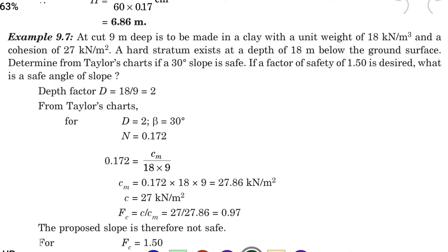So the question is, a cut 9 meter deep is to be made in the clay with the unit weight of clay is 18 kN per meter cube and a cohesion of 27 kN per meter square.